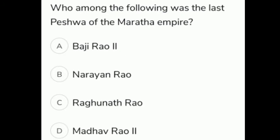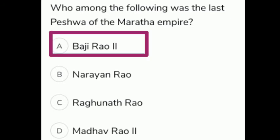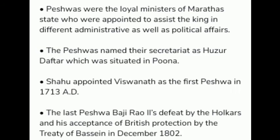Who among the following was the last Peshwa of the Maratha Empire? The given options are A Baji Rao II, B Narayan Rao, C Raghunath Rao, D Madhav Rao II. The correct answer is option A, Baji Rao II. Peshwas were the royal ministers of the Maratha state appointed to assist the king in administrative and political affairs. The Peshwas named their secretariat as Huzur Daftar, situated in Pune. Shahu appointed Vishwanath as the first Peshwa in 1713 AD. The last Peshwa, Baji Rao II, was defeated and accepted British protection by the Treaty of Bassein in December 1802.